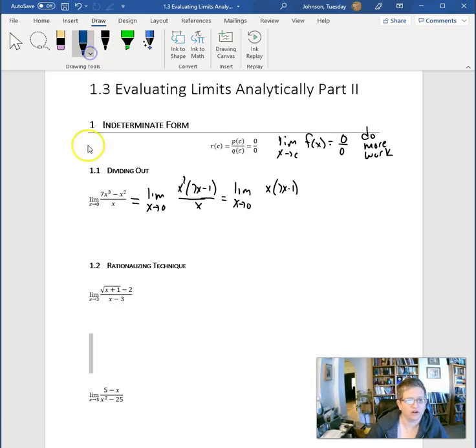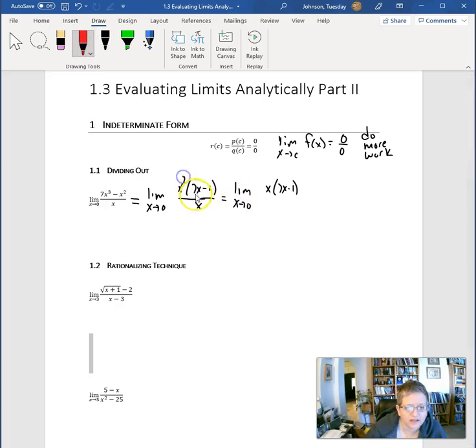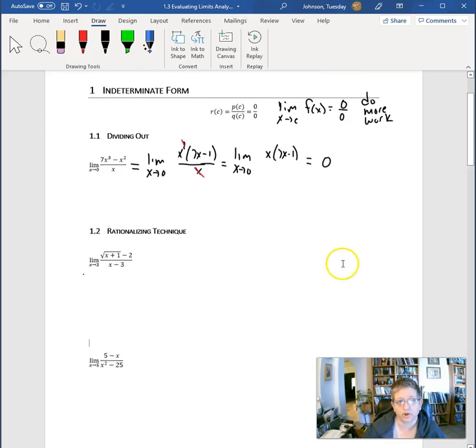I have colors now. Let's do this right. So this x squared cancels this x. And now I'm just looking at the limit as x approaches 0 of x times x to 0. So sometimes 0 over 0 can equal 0. And that's the limit.